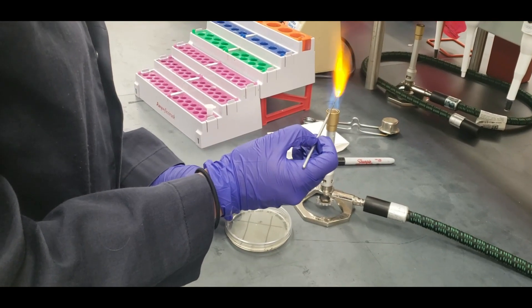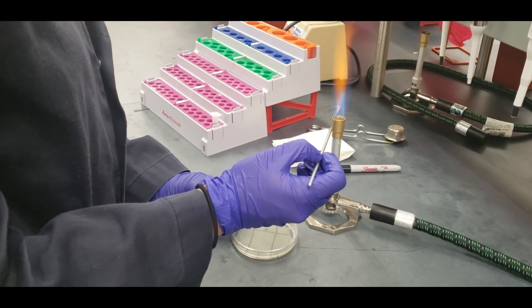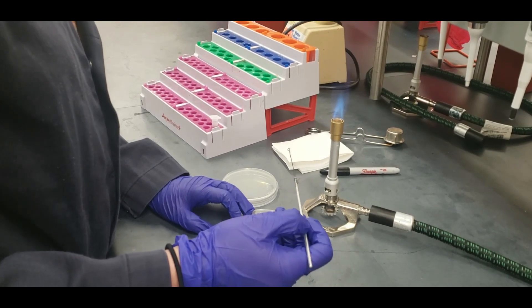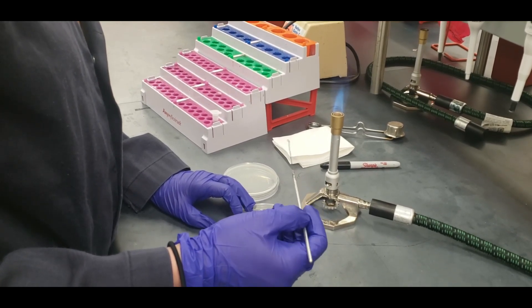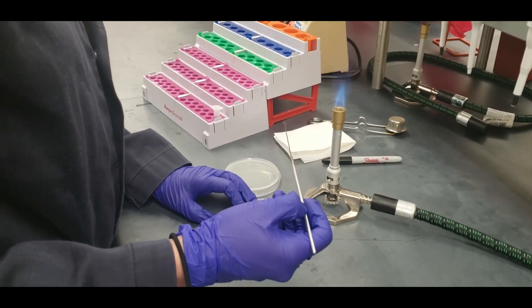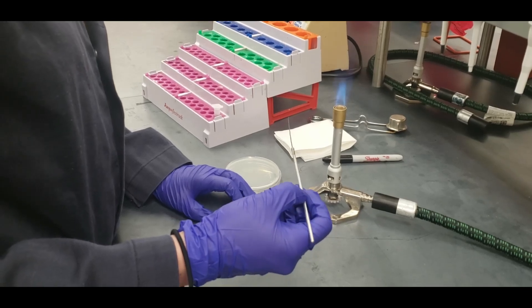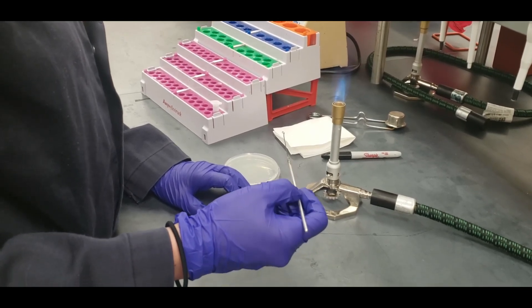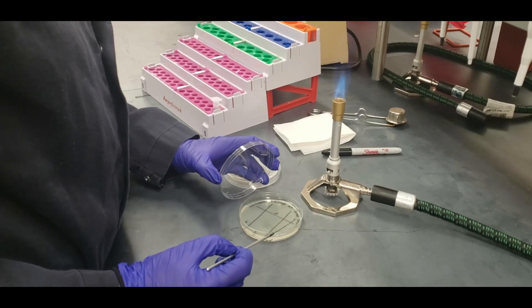You're going to flame your loop again, completely sterilizing it, making sure it cools. You're going to pull only one time from quadrant one into quadrant two. Make sure you don't cross over into quadrant one.